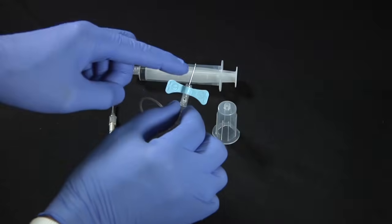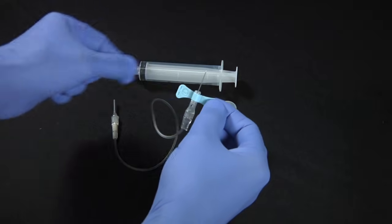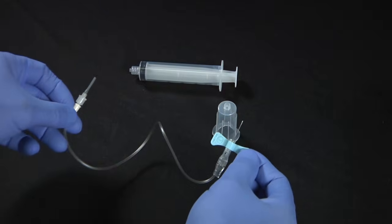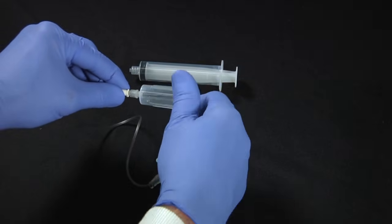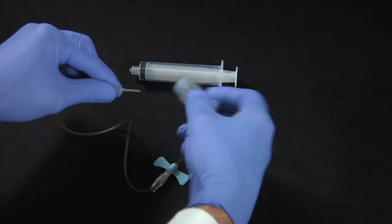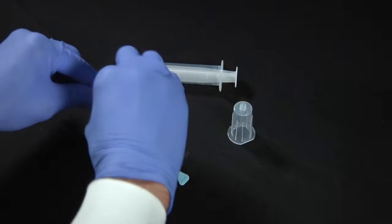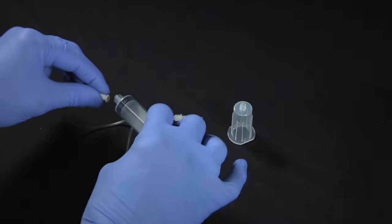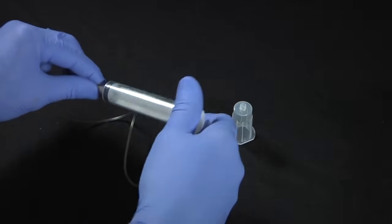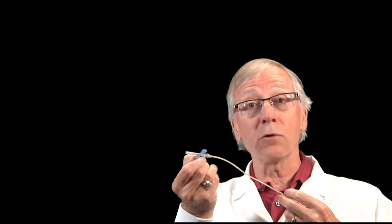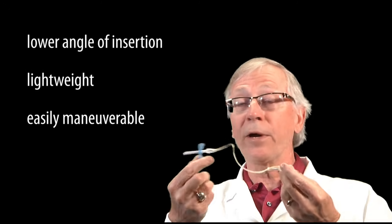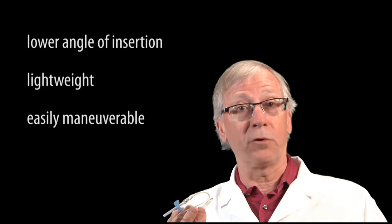Butterflies have a needle, two wings (hence their name), a long tubing and another needle at the other end for attaching a tube holder adapter and filling blood collection tubes. Some styles have a luer instead of a needle for attaching to a syringe if the situation requires it. Some come with both so you can attach whatever you'd like. The beauty of a butterfly set is that it allows for a lower angle of insertion. It's lightweight and easily maneuverable which gives you greater control.